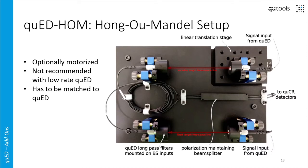This add-on has to be matched to the corresponding Q-Add, since it's very important to have the same path length for the two photons from the BBO crystal all the way to the polarization-maintaining beam splitter on the add-on. We do that for you at Qtools — we arrange everything such that the fibers from the Q-Add to the HOM setup are of the same length. We also put a small marker where you can see the spot of the variable translation stage where we observe the Hong-Ou-Mandel interference.